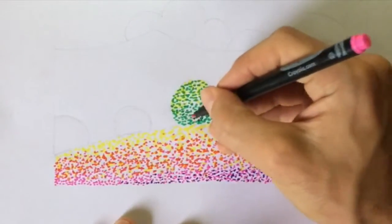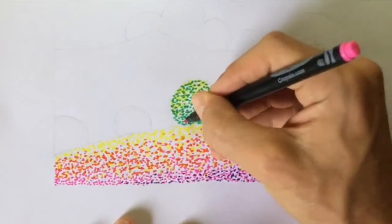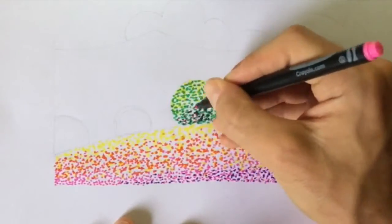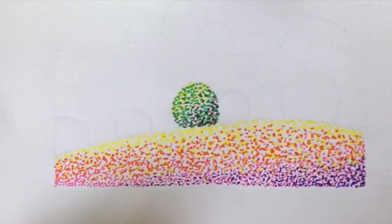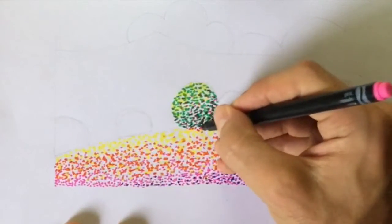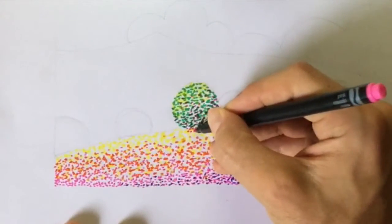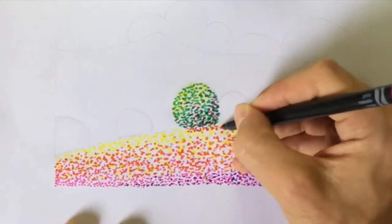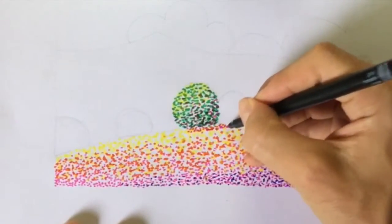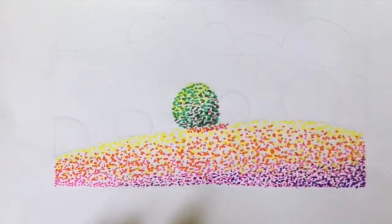And this will make it look darker on this side. And finally, while I still have the pink, I'm just going to spread a little bit of that pink onto the yellow underneath, because the bush has a shadow on this hillside too. Does that make sense?